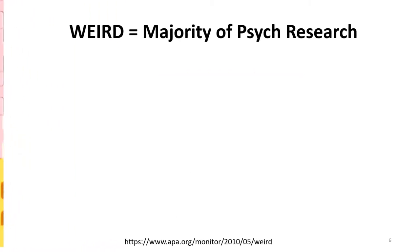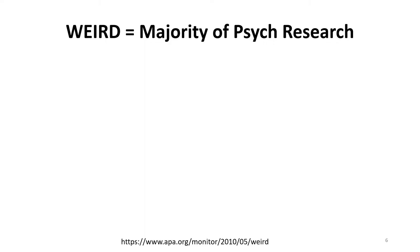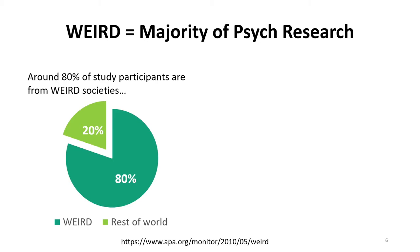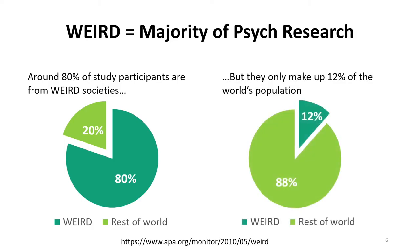Looking at data collected around 2010, it has been found that around 80% of study participants come from WEIRD societies — societies that are very Western, educated, democratic, etc. So roughly 80% of psych research has participants coming from these societies. However, looking at the makeup of the world, we know that this type of demographic only makes up 12% of the world's population, which means the majority of research is based on only 12% of this slice of the pie.